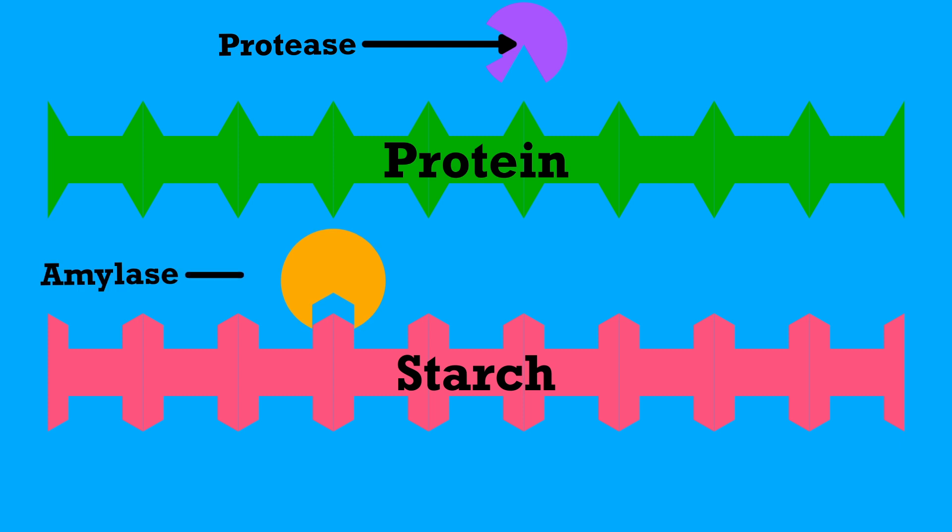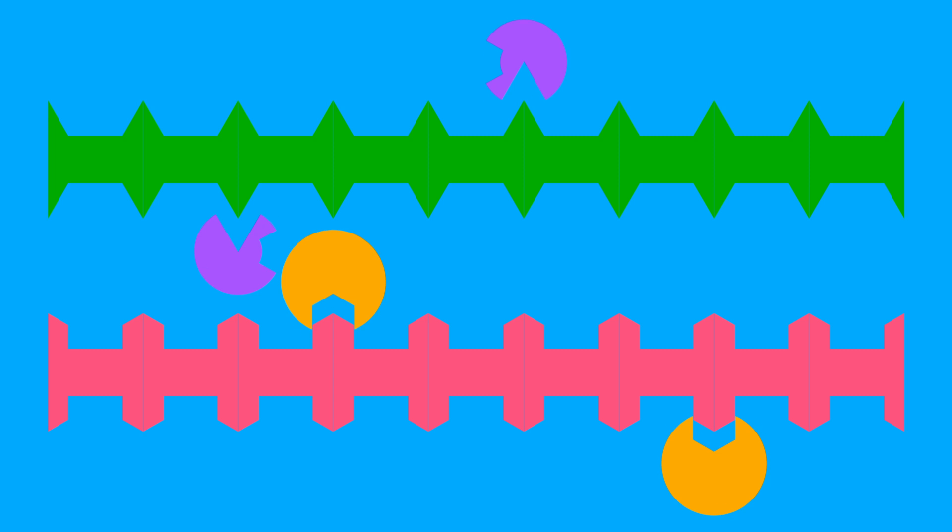The two main types are protease for breaking down protein and amylase for breaking down starch. The different enzymes have different activation sites which are a perfect fit for the molecules they are trying to break down. Once the enzymes and the molecules bind, the reaction can occur. The broken down molecules are then able to be dissolved and the enzyme is free to bind to other molecules.